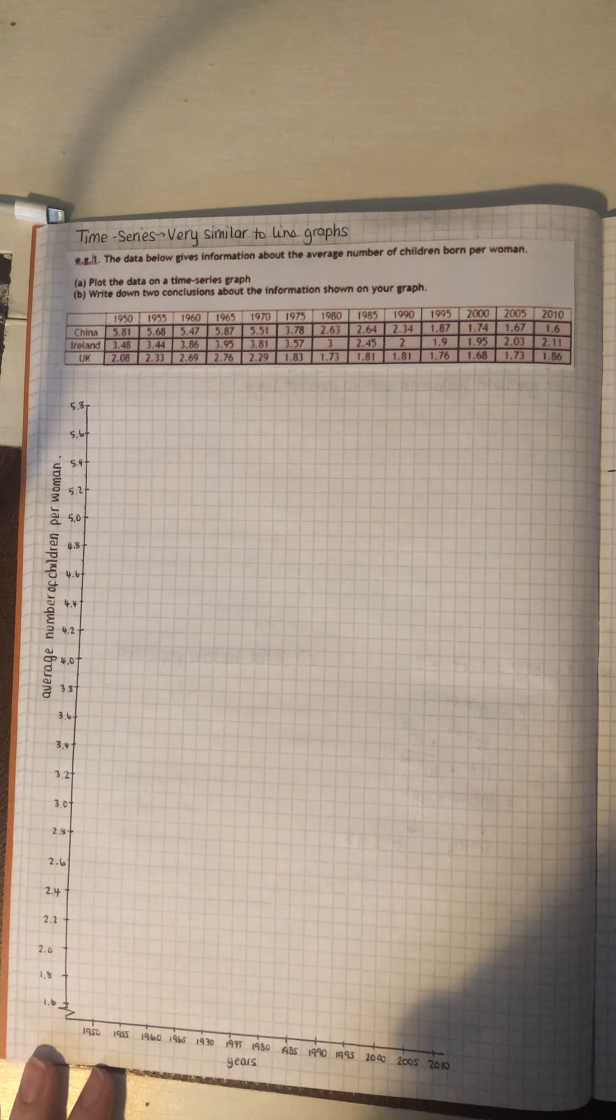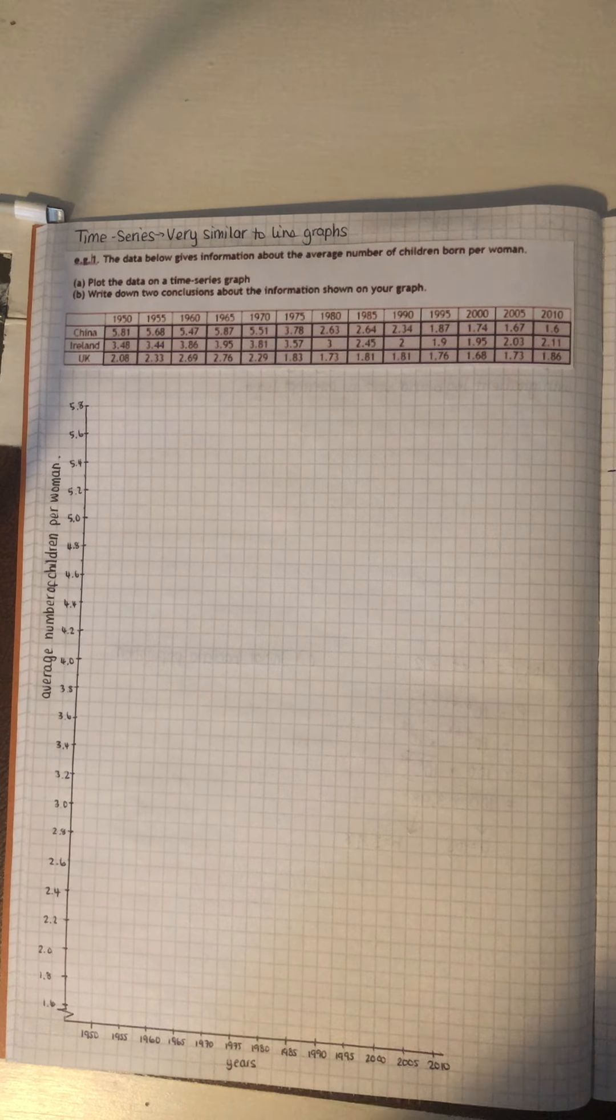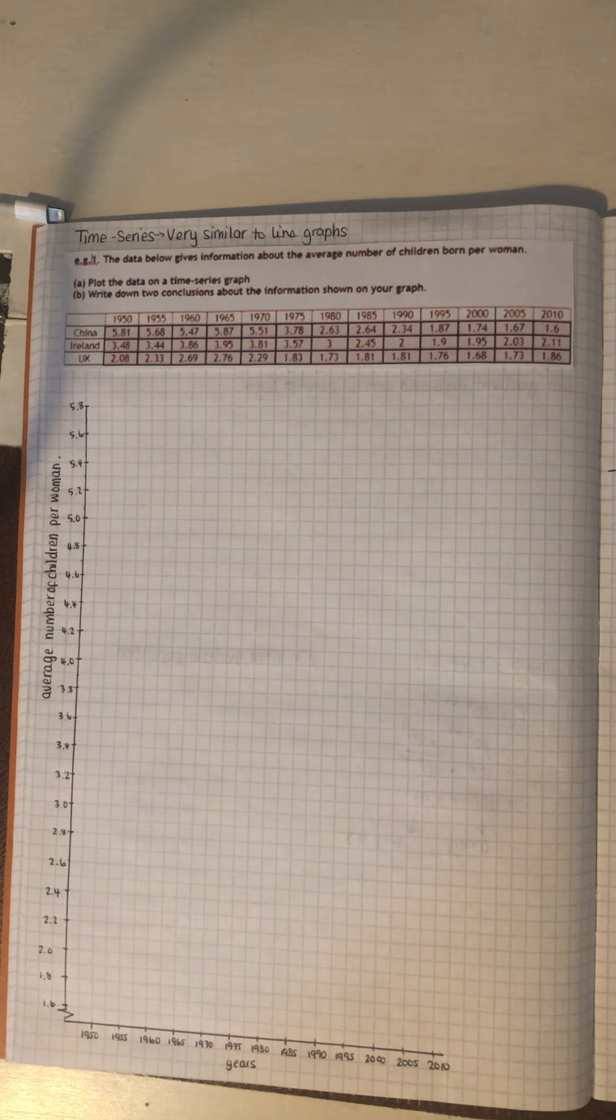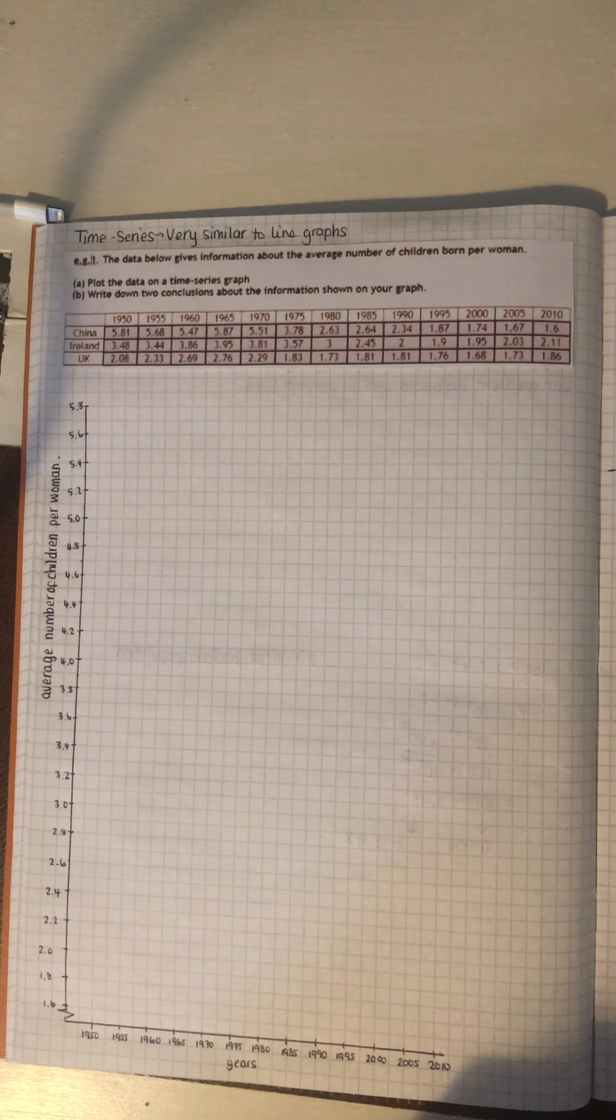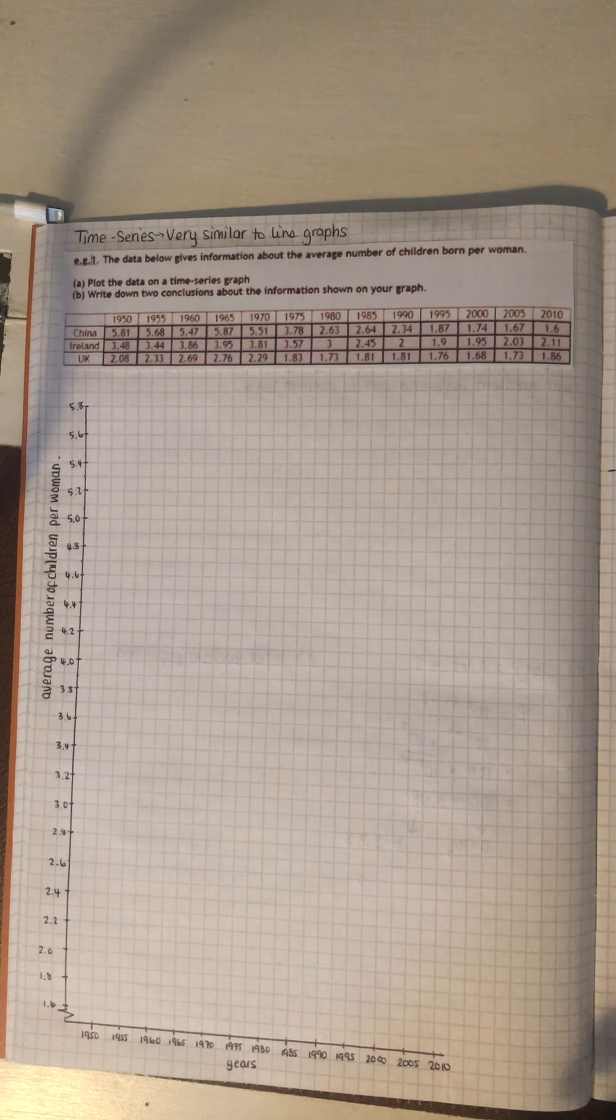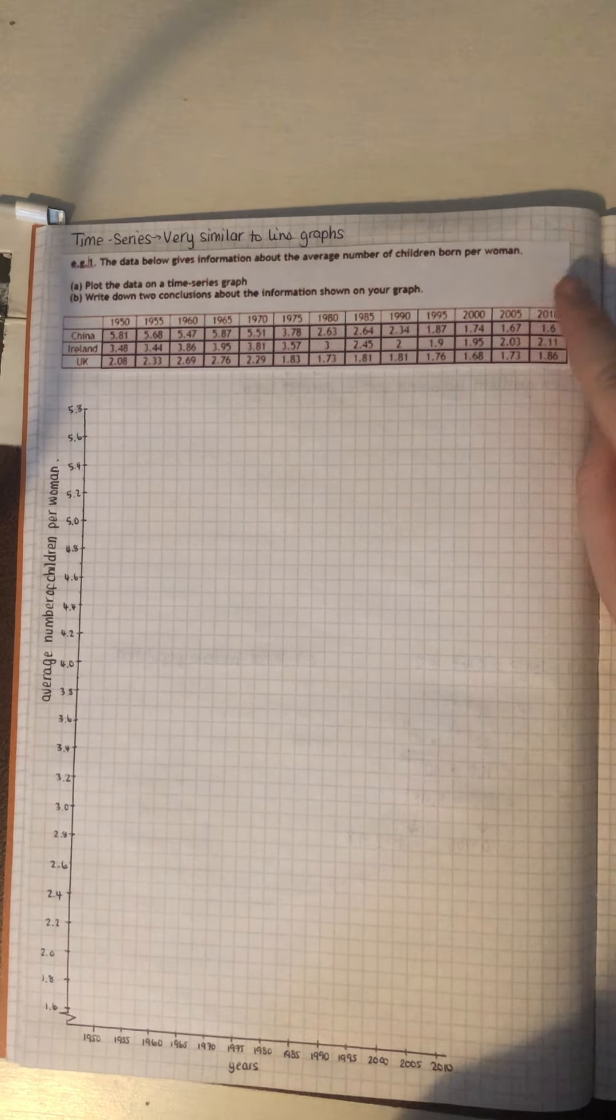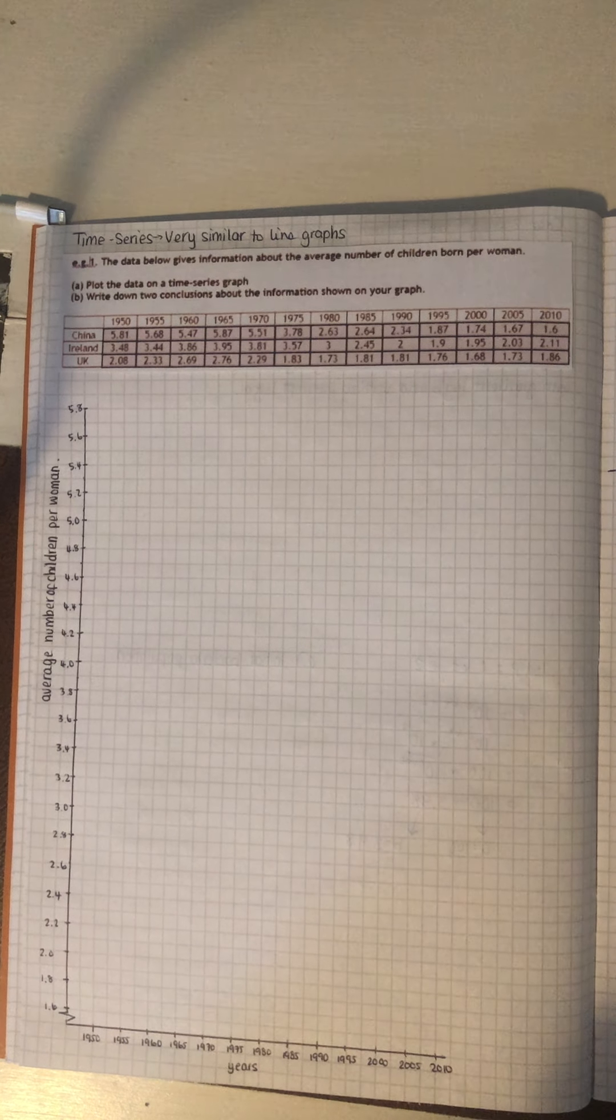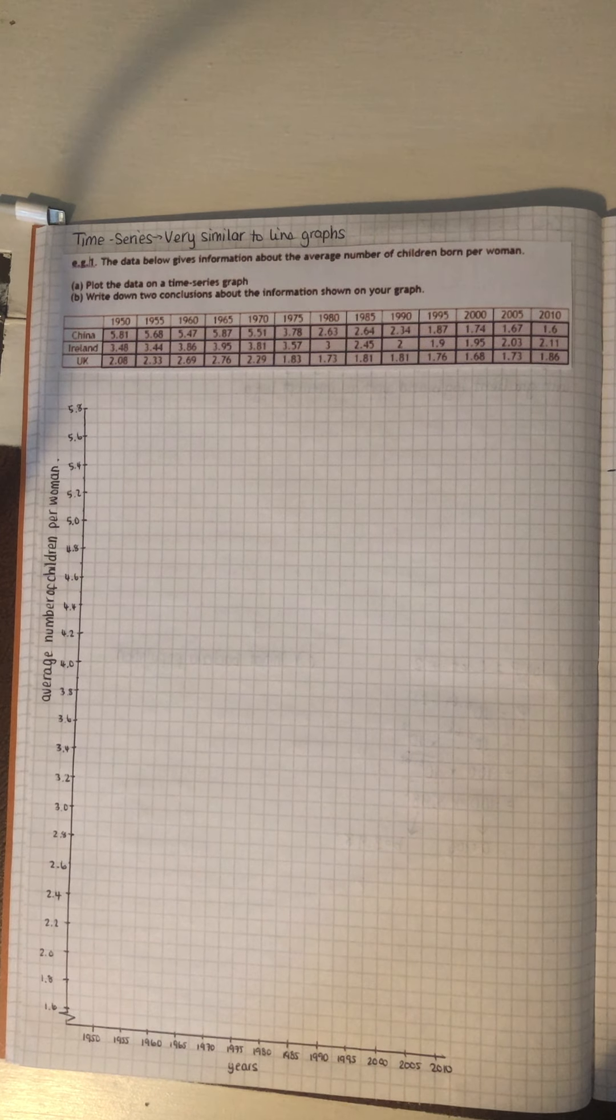Okay, so in this video we're going to be talking about time series. Now, time series is very similar to just a line graph, but you're just going to be dealing with time along the bottom. So that is one thing that you need to remember is that time does always go along the bottom here. Secondly, you're generally going to have more than one line. So for the example that we're doing today, this is to do with the number of children per woman over periods of time from the 1950s up to 2010, and we have got the three countries there: China, Ireland and the UK.